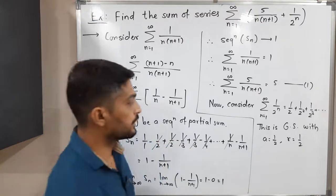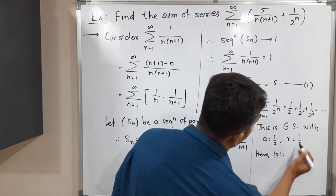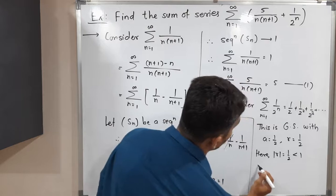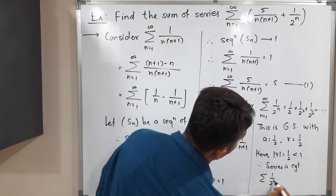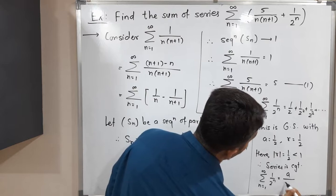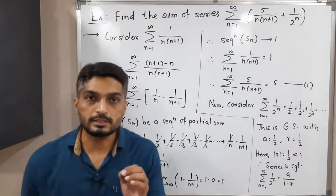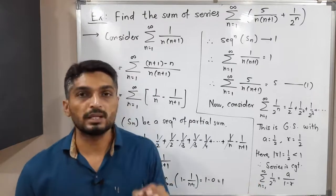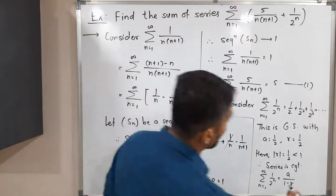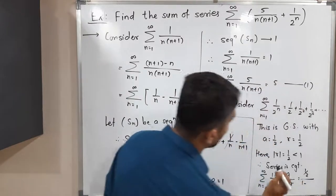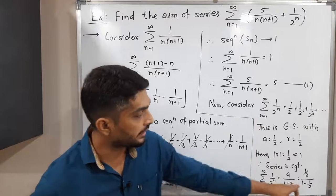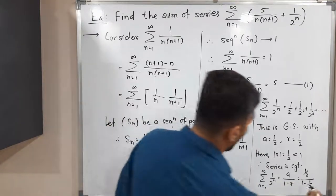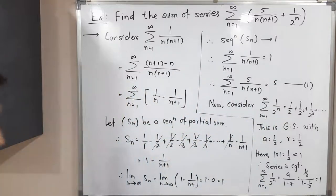We have already seen that if a geometric series has common ratio r and |r| < 1, then the series is convergent. Here |r| = |1/2| = 1/2, which is less than 1, so the series is convergent. The sum of this geometric series is given by a/(1 minus r). Substituting a = 1/2 and r = 1/2: we get (1/2)/(1 minus 1/2) = (1/2)/(1/2) = 1. So the sum of this series is 1.